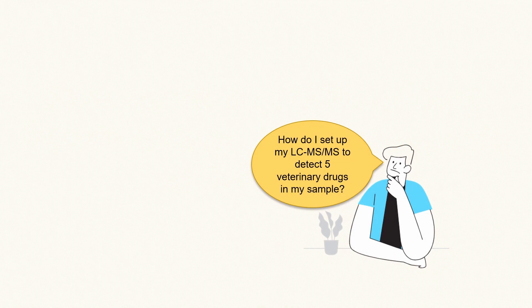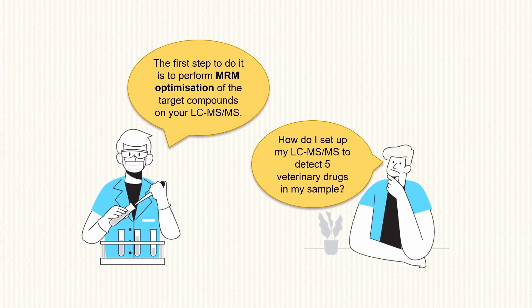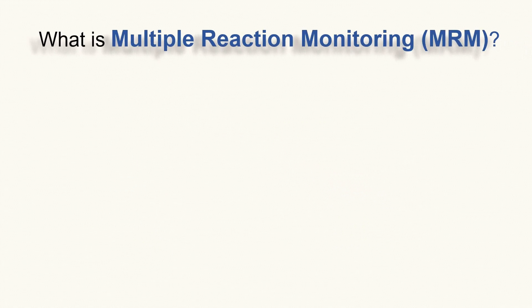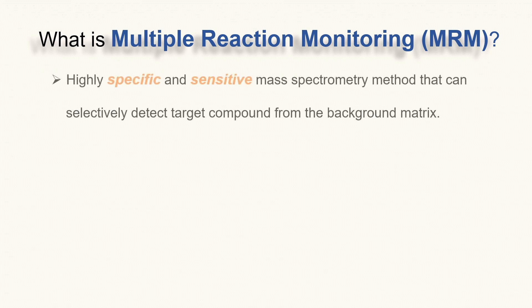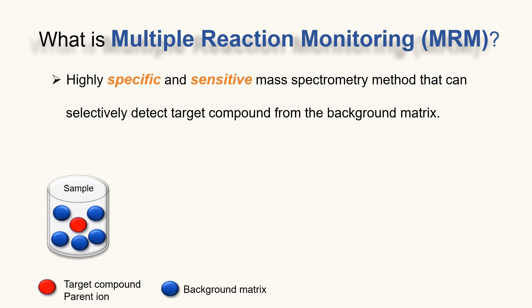The first step is to perform MRM optimization of the target compounds on your LC-MS-MS instrument. Multiple reaction monitoring, often known as MRM, is a highly specific and sensitive mass spectrometry method that can selectively detect target compounds from the background matrix.